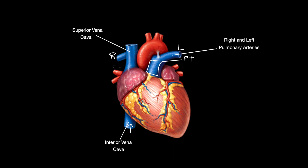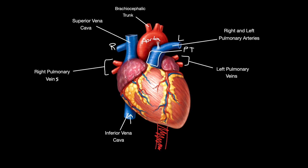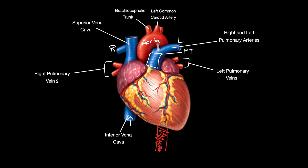Over here we have the right and left pulmonary veins. The largest vessel in our body is located here and it is called the aorta, which drops down behind the heart. To the right we have the brachiocephalic trunk, in the middle is the left common carotid artery, and to the left we have the left subclavian artery. These branches deliver oxygen-rich blood to the upper body, and past this the aorta descends behind the heart where it delivers blood throughout the lower body.